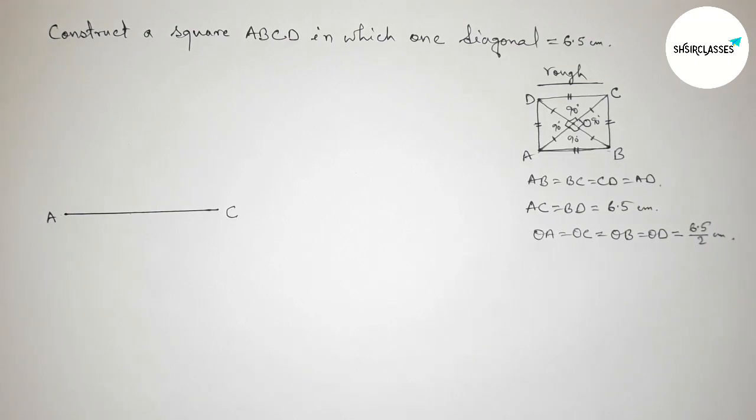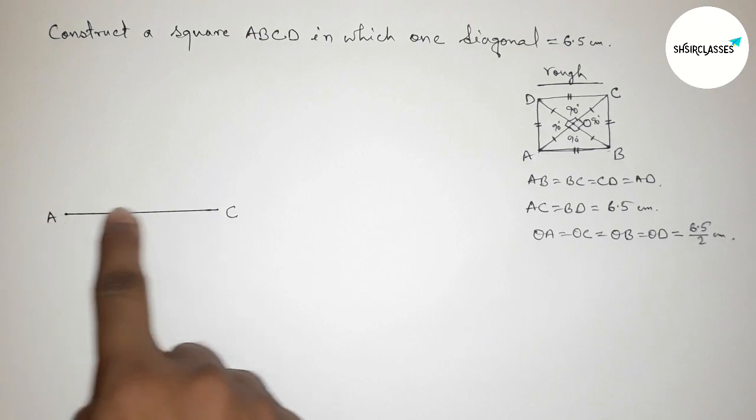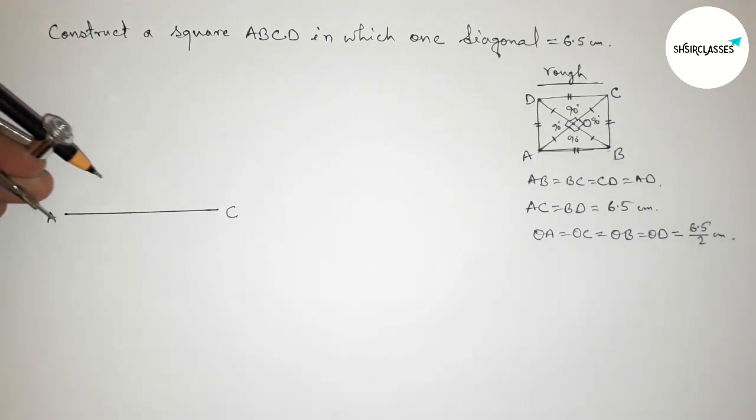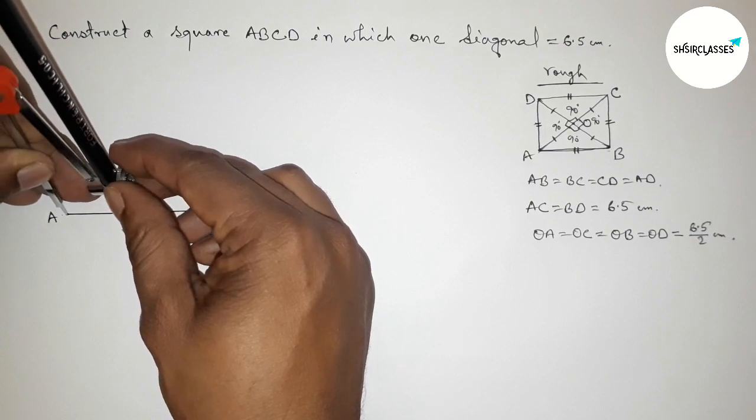So this is six point five by two centimeter. So first we have to bisect the line AC with perpendicular. So with the help of compass, putting the compass here.